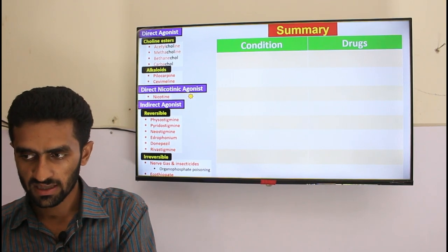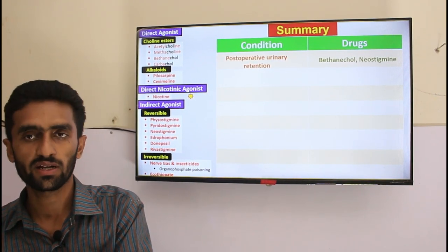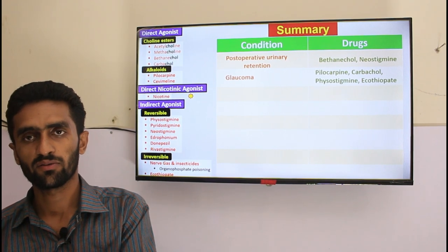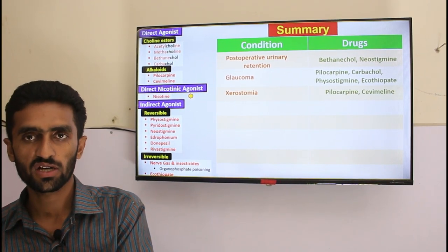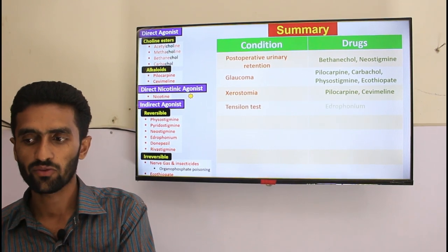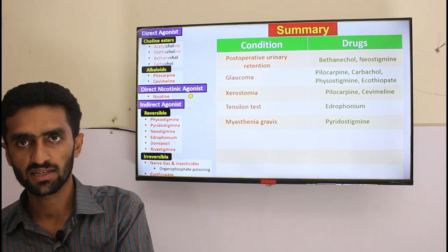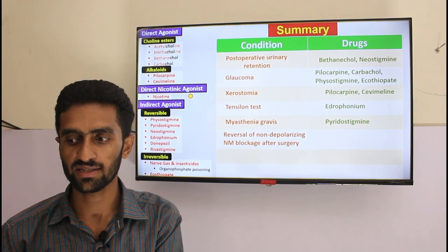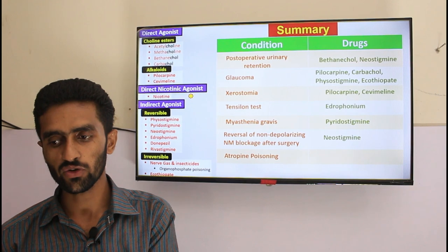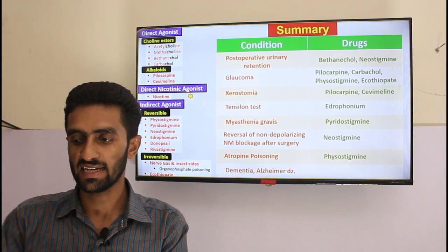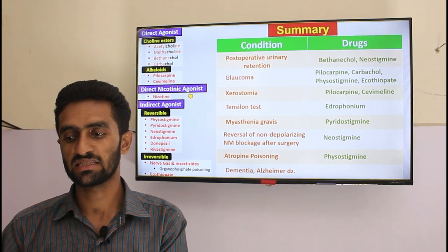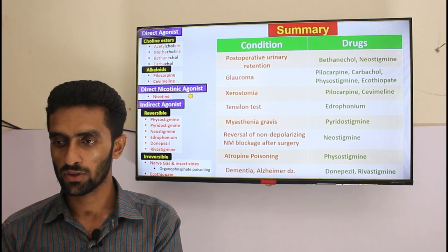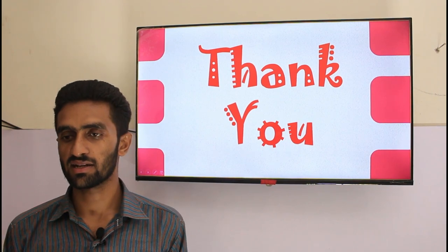Echothiophate is rarely used for glaucoma with a similar mechanism to decrease intraocular pressure; poisoning is treated similarly to nerve gas/insecticide poisoning. Summary: for post-operative urinary retention — bethanechol or neostigmine; for glaucoma — pilocarpine, carbachol, physostigmine, or echothiophate; for xerostomia — pilocarpine and cevimeline; Tensilon test/edrophonium for myasthenia gravis diagnosis; pyridostigmine and neostigmine for symptomatic treatment; neostigmine for reversal of neuromuscular blockade; physostigmine for atropine poisoning; donepezil or rivastigmine for Alzheimer's/dementia.